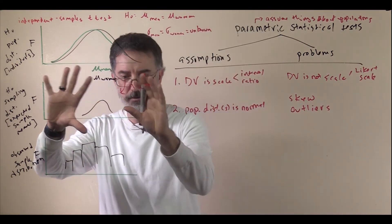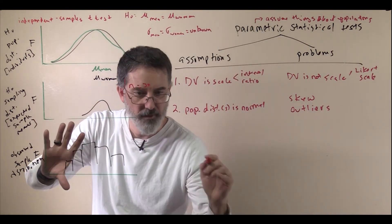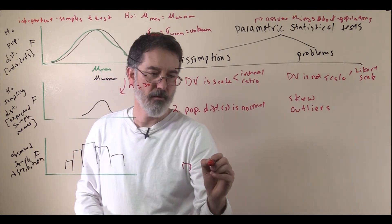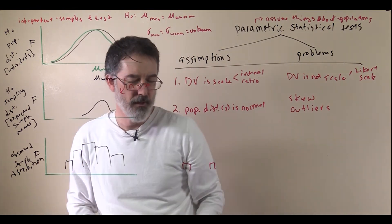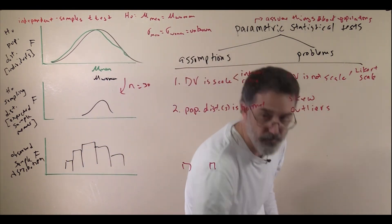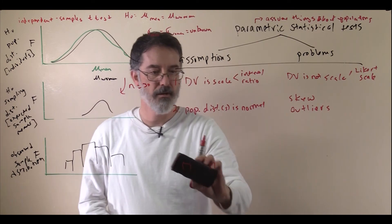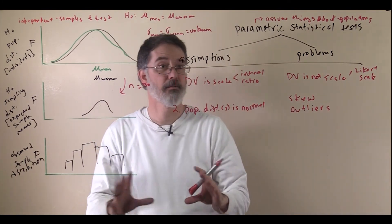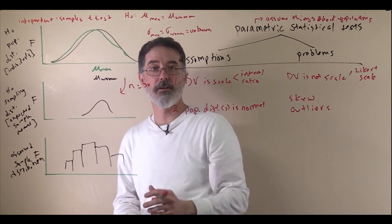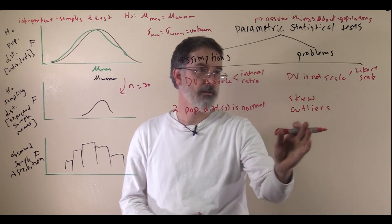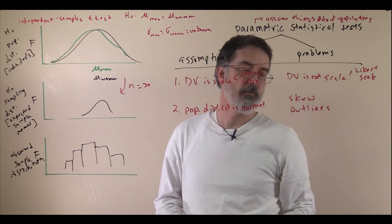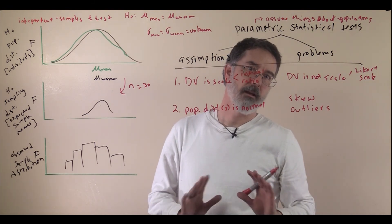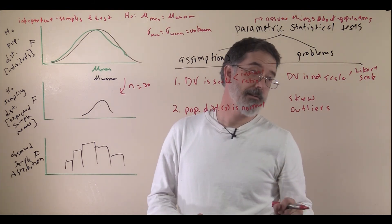Outliers are individuals that are very far from the rest of the sample — like one or two people way out on one end. Outliers are a bigger problem for parametric tests because they really influence sums of squares, which are involved in all these tests. So outliers are more of a problem. In that case, you might want to use one of the non-parametric tests that we will talk about.